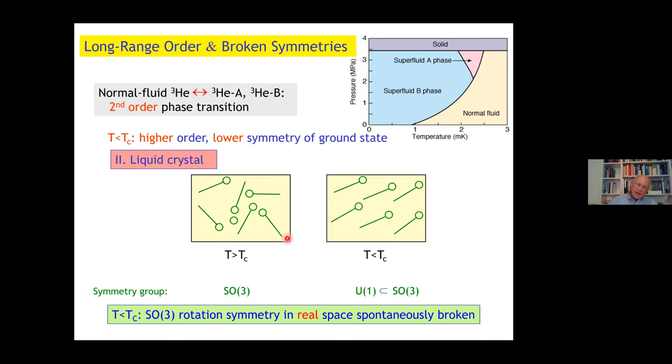In a liquid crystal, the same thing happens but in orbital space. Above T_C it's disordered, symmetry group is SO3. Below, there's ordering into a certain direction. The only symmetry that remains is the rotation around this axis, which is U1 again. Below T_C, the SO3 rotation symmetry in real space is spontaneously broken in a liquid crystal.